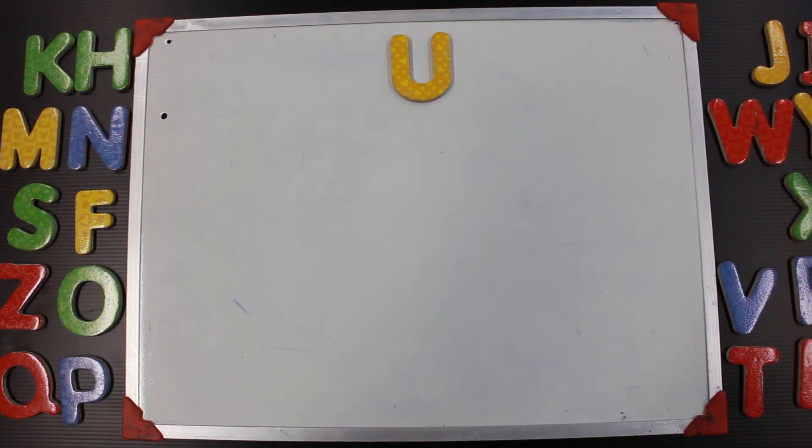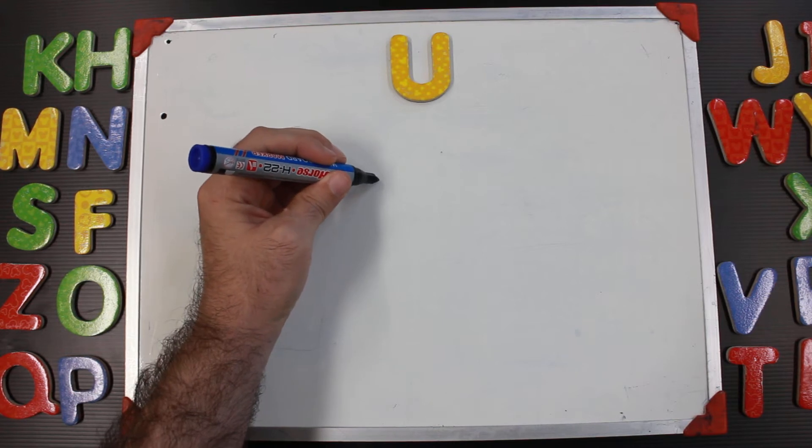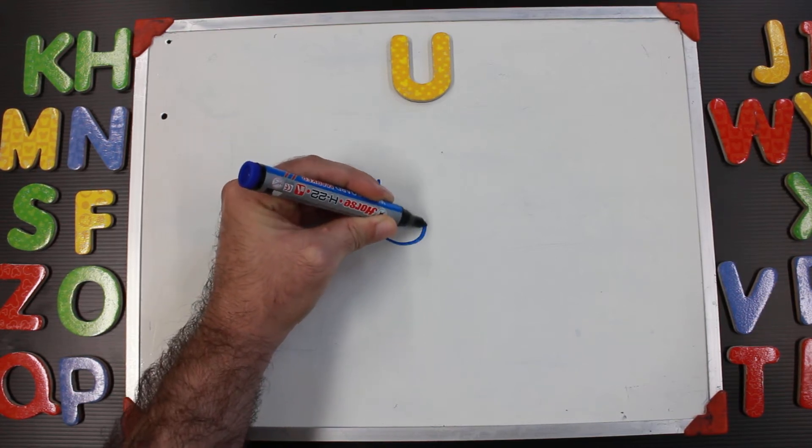Okay, let's work on the letter U. To start, we go on the left side first. We go down and then we come back up.